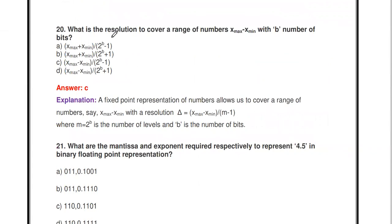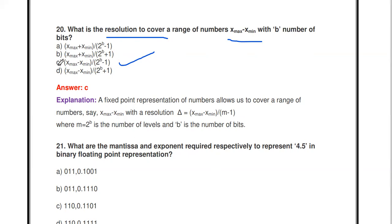Next question: what is the resolution to cover a range of numbers from x_max to x_min with b number of bits? The resolution formula is: (x_max − x_min) / (2^b − 1). If the signal x has maximum value x_max, minimum value x_min, and b is the number of bits, then the resolution is (x_max − x_min) / (2^b − 1).